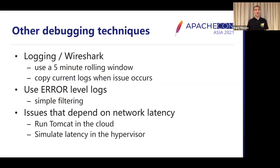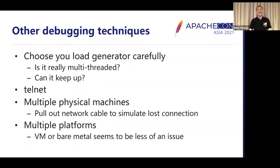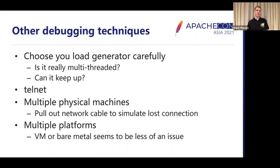Third technique is around network latency — we had an issue where a user reported they could only recreate it when they ran Tomcat in the cloud. You can use the latency options in your hypervisor to simulate the same thing. Any tests that involve load generators: treat the load generator with suspicion. It seems to me I spend about half my time debugging the Tomcat issue and the other half debugging what the load generator is doing, because it's not behaving the way I'd expect based on the documentation. Ask yourself: is it really multi-threaded? Can it keep up? Are the errors you're seeing because it's not handling responses properly or not generating requests properly?